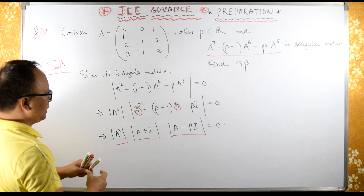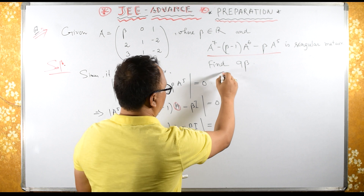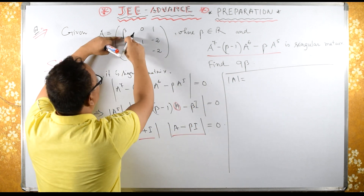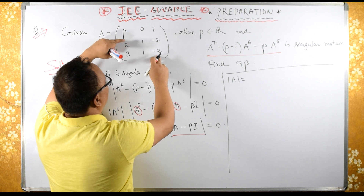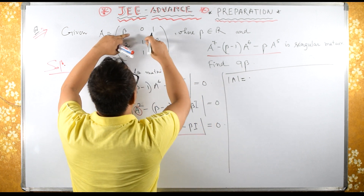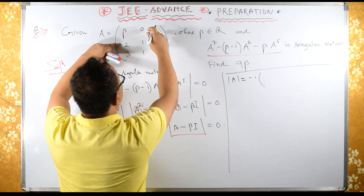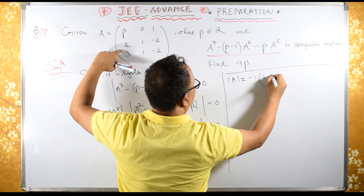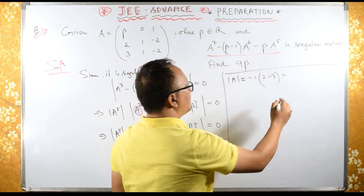Now let us find determinant of A. Determinant of A equals beta times this cofactor — removing the row and column we get 2 minus 2 plus 2 equals 0, so beta times 0 is 0. Then minus 1 times minus 1 times minus 1, which gives plus 1. So determinant of A equals 1.